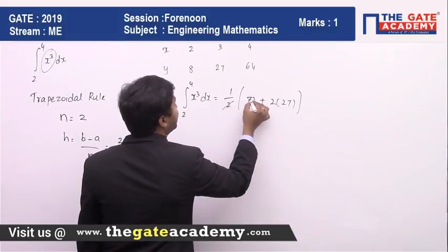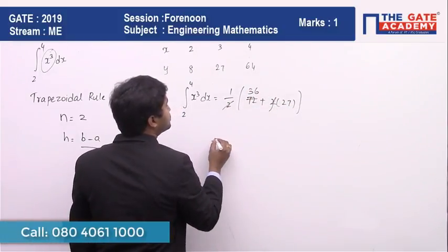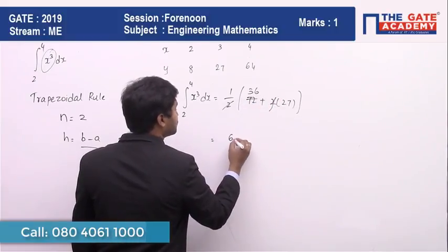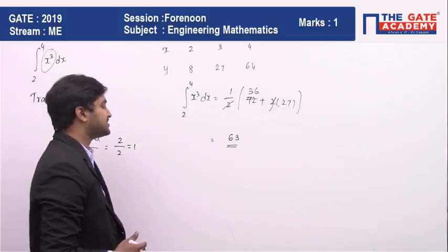2 goes inside, cancels with this 1 which is 36, and here 2 gets cancelled out. So 36 plus 27 is going to be equal to 63. So the answer for this question is 63.